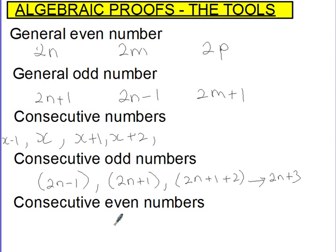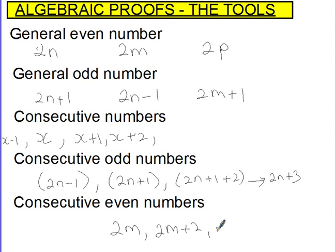Consecutive even numbers. Take a general even number: 2n is a standard way of writing an even number. To generate the next even number — take any even number, say 6 — you add 2 to get the next even number. So the next even number is 2n plus 2, then 2n plus 4. The letter doesn't matter; just choose a letter and go from there. Those are the general tools you'll need to answer typical algebraic proof questions.